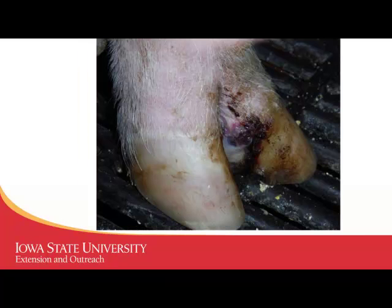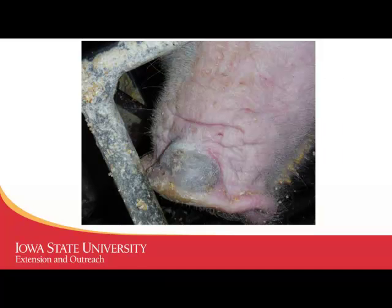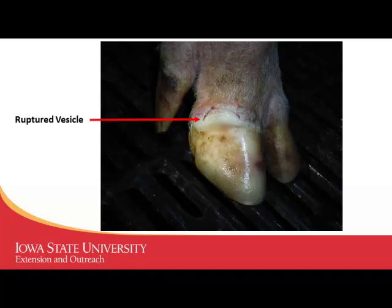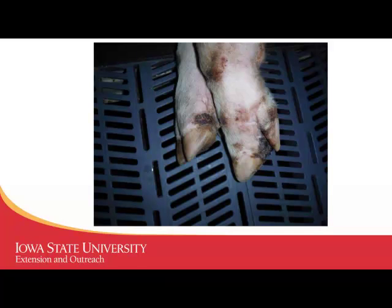Here's another unerupted, large vesicle sitting on the nose of a sow. Here's a ruptured vesicle — probably just within minutes of taking the picture — you can see it looks like a blister that's ruptured, and the coronary bands and hoofs are all wet from vesicular fluid. There's lots of virus in that sample. Here are some more where the sow had probably been affected for a couple of days — the vesicles have ruptured and are starting to heal and scar over.